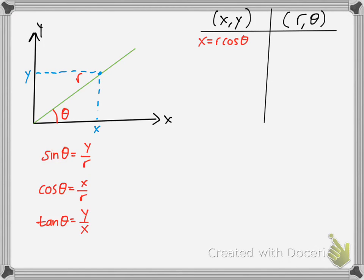So if we solve for x in the second equation, you get x equals r cosine theta. If we solve for y in the first equation, we get y equals r sine theta.